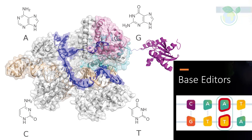Different base editors have been created allowing base conversions in a variety of target regions. Base editors are composed of a catalytically dead Cas9, nCas9 or dCas9, fused to a deaminase and guided by a single-guide RNA, sgRNA, to the locus of interest. The catalytically dead Cas9 recognizes a specific sequence named protospacer adjacent motif, PAM, and the DNA unwinds thanks to the complementarity between the sgRNA and the DNA sequence usually located upstream of the PAM, also known as the protospacer. The opposite DNA strand is then accessible to the deaminase, which converts the bases located in a specific DNA stretch of the protospacer.